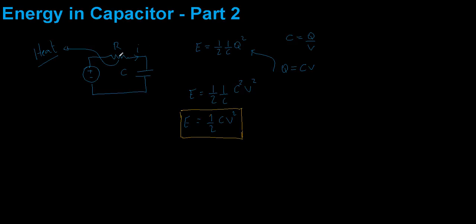If you make the resistance smaller, there will be more current and the power dissipation is going to be higher, so we dissipate the energy faster. And in fact if you remove the resistor altogether and just have a normal copper wire, half of the energy will be dissipated as electromagnetic radiation — as electromagnetic waves in the air — and some will be lost in the conductor wires.